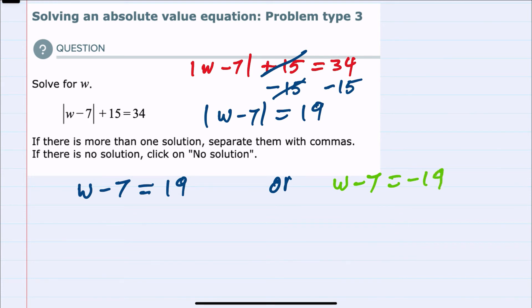Either way, taking the absolute value would give us that positive 19. So we'll continue solving for each one.